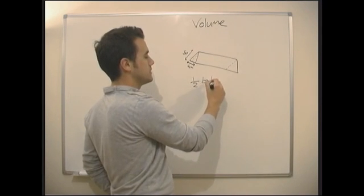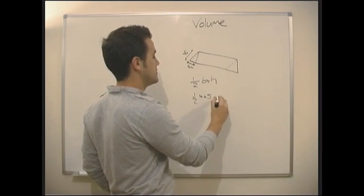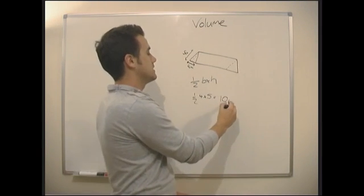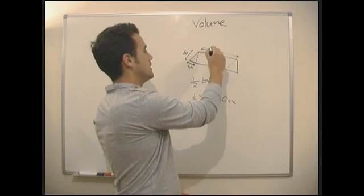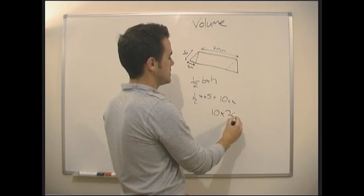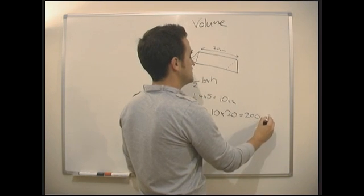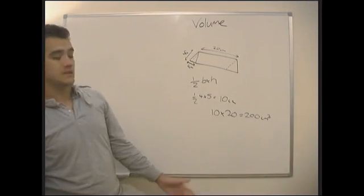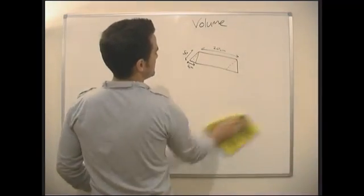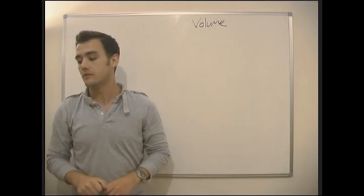Now, it's a half base times height, remember, so it's just going to be a half, 4 times 5, which is 10, because 4 times 5 is 20, half of that is 10. So, it's going to be 10 centimeters, and the length here is 20 centimeters. So, I'm just going to have 10 times by 20, which is 200 centimeters cubed. And that's going to be that one. It's that simple. So, there'll be some of those in the questions for you to practice.